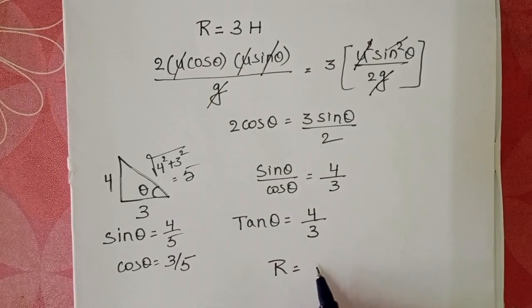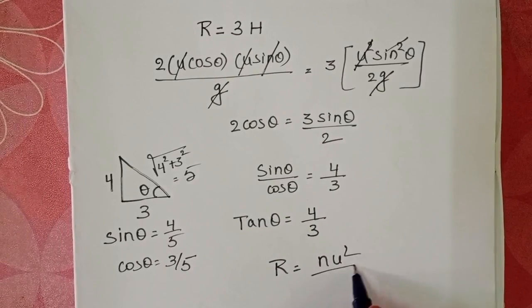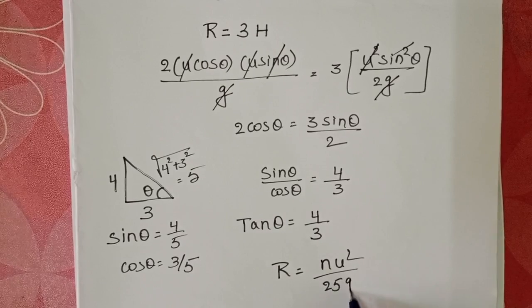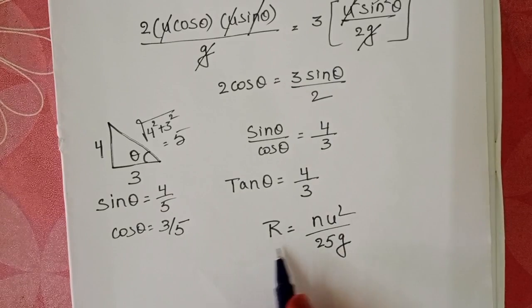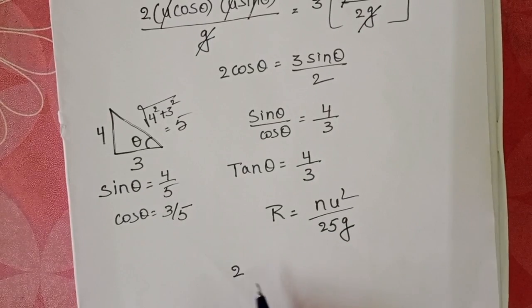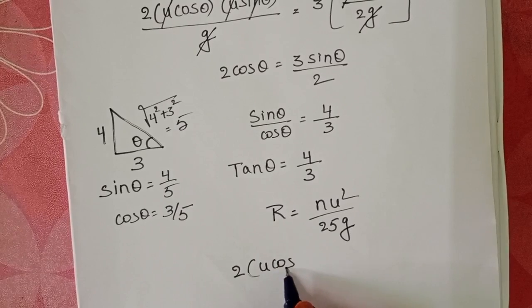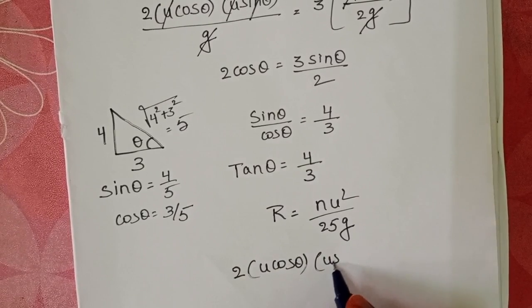Range equals nu²/25g. Again, write the formula of the range: 2ucosθusinθ/g.